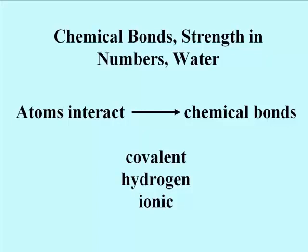Covalent bonds are the strongest — it takes the most energy to break them. Although weaker, hydrogen and ionic bonds are responsible for many crucial molecular interactions in cells.